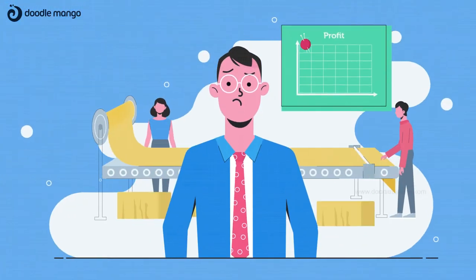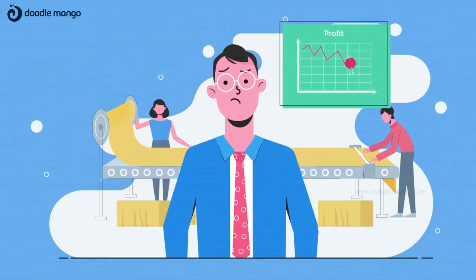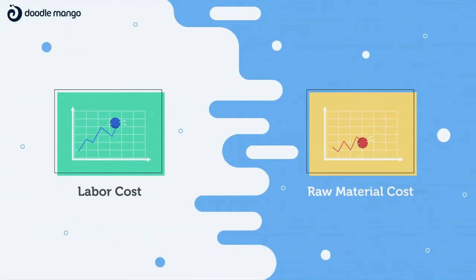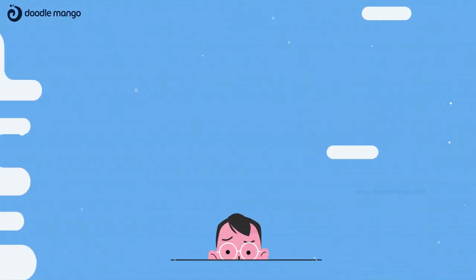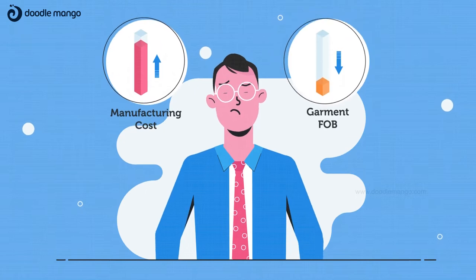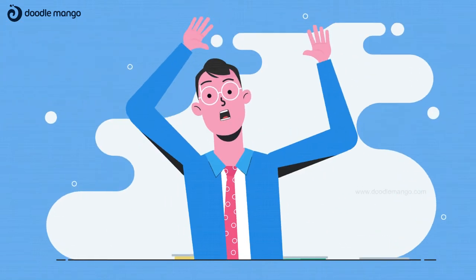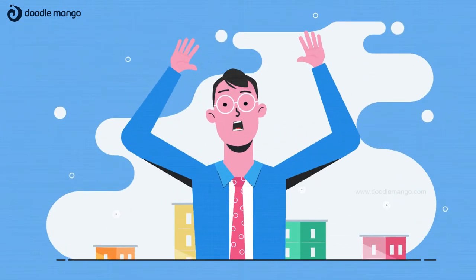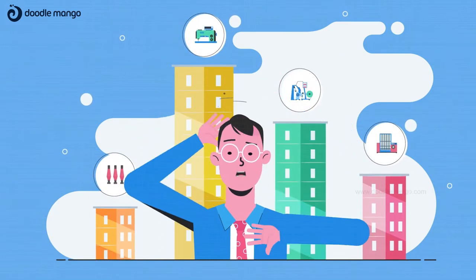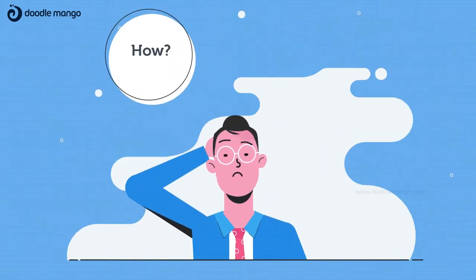Struggling to grow your business with shrinking profit margins? With growing cost of labor and raw material and constant pressure from buyers to further reduce FOB, garment manufacturers must bring down the manufacturing costs to stay competitive. But how?